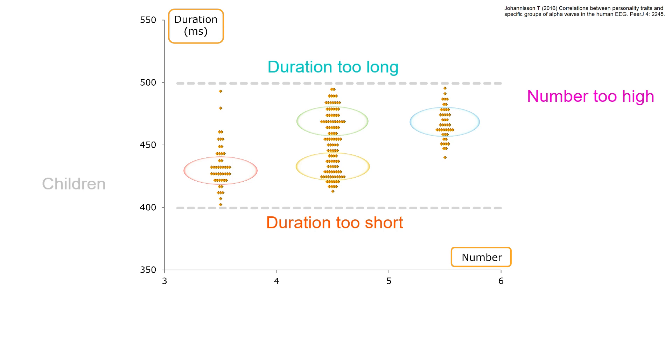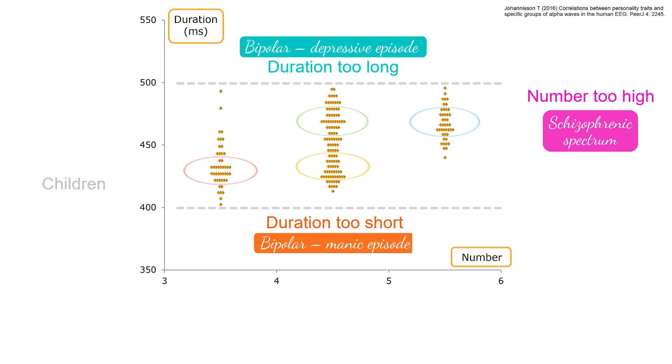Some values for number and duration lead to mental illness. Number disorders are disorders in the schizophrenic spectrum. Duration disorders include manic and depressive disorders. Too long duration leads to depression with reduced psychomotor speed. Too short duration causes manic episodes.